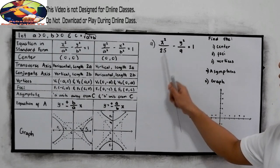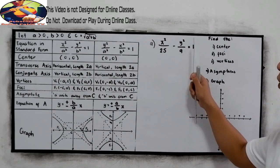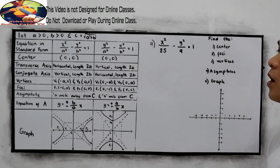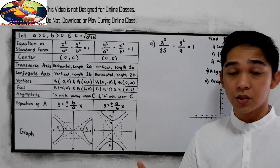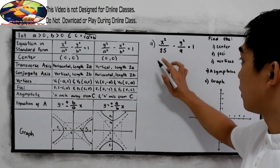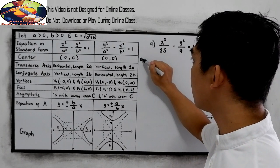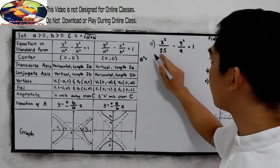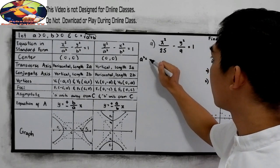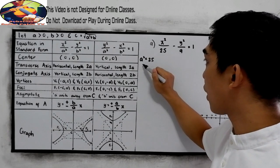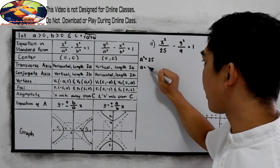Our first example: x squared over 25 minus y squared over 9 is equal to 1. First step: find the values for A, B, and C. So A squared is equal to 25 — taking the square root, our A is 5.